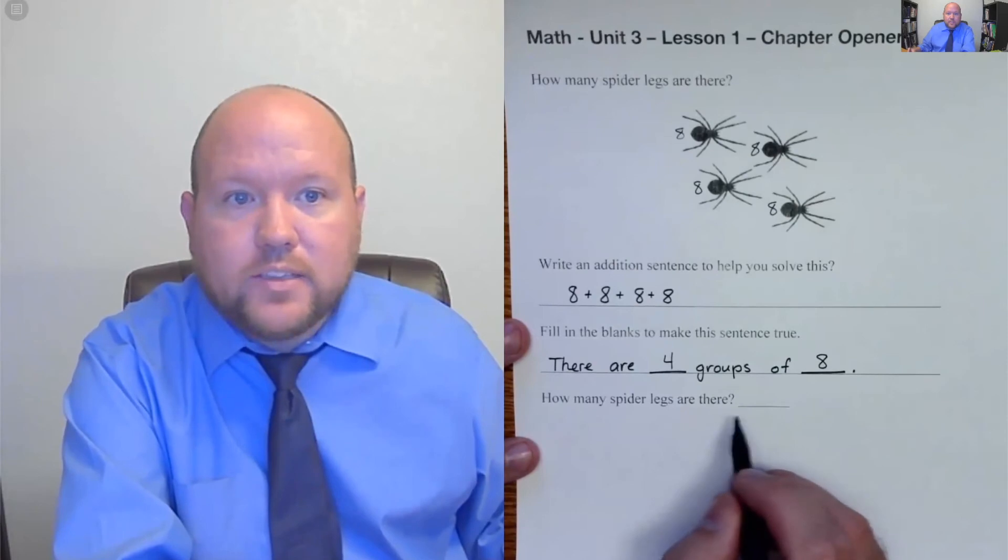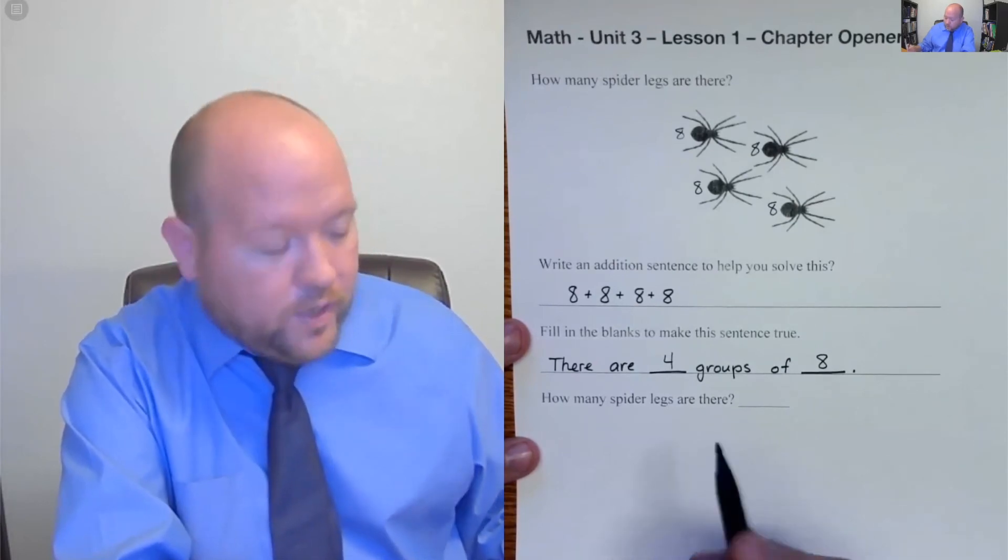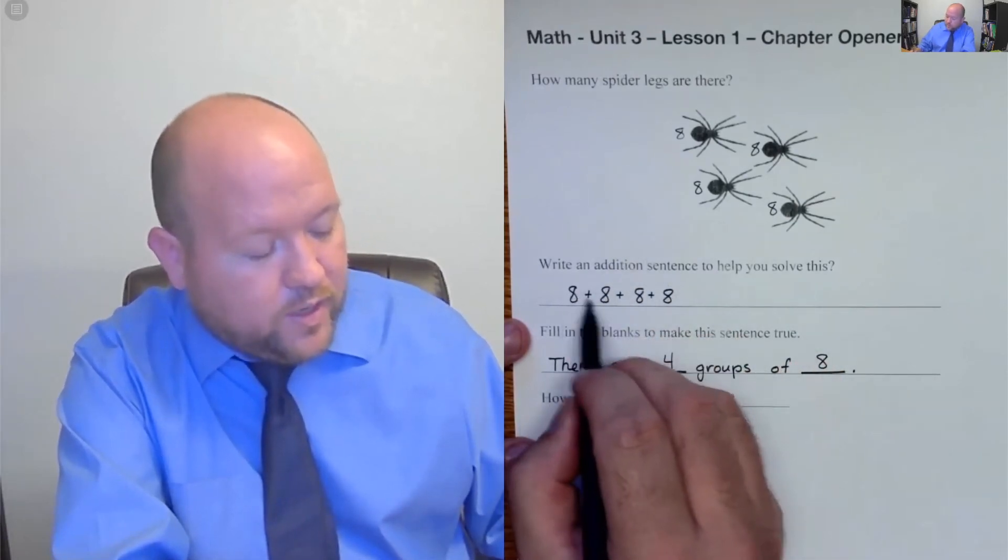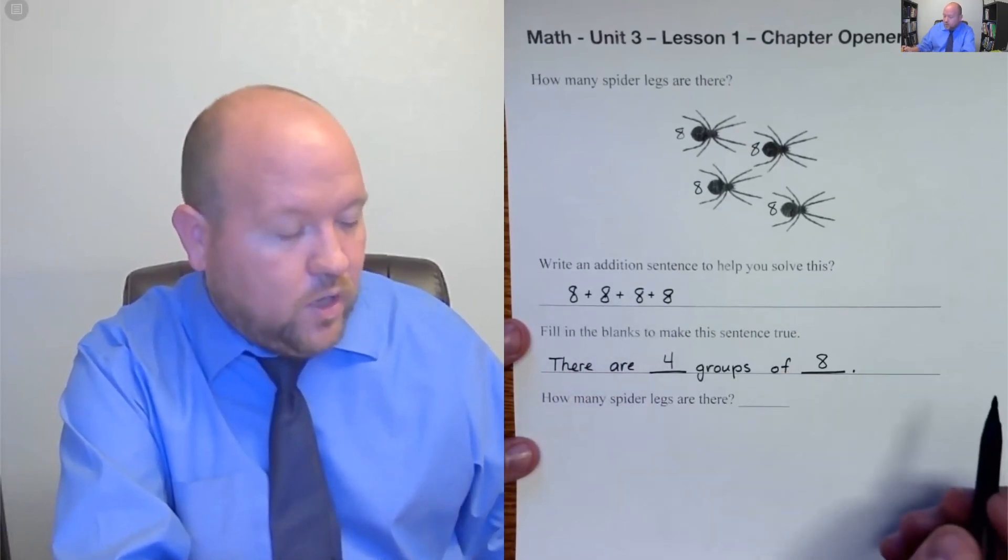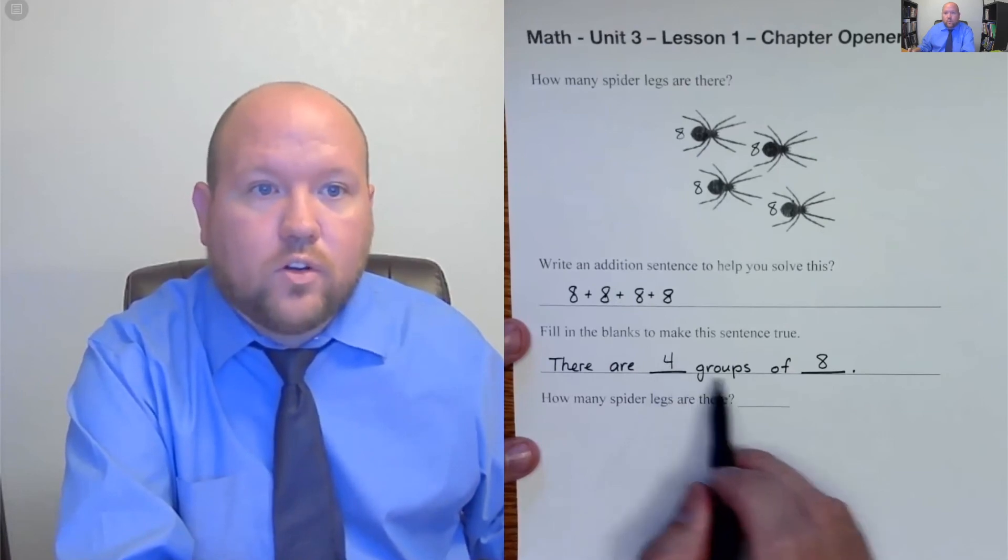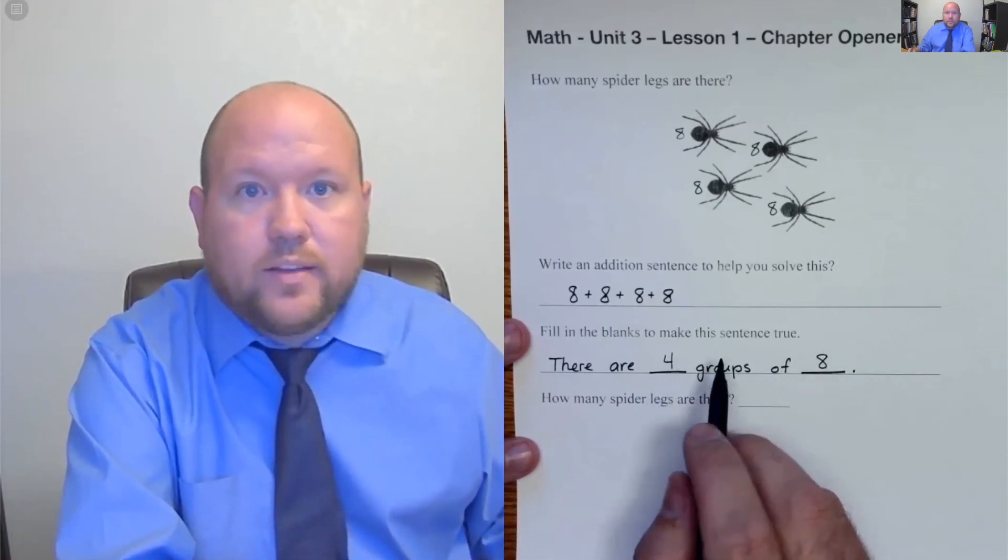How many spider legs are there all together? We can do this a number of different ways. We can think eight plus eight is 16 plus eight is 24 plus eight is 32. Or we can think of four groups of eight. We can count up by eight.